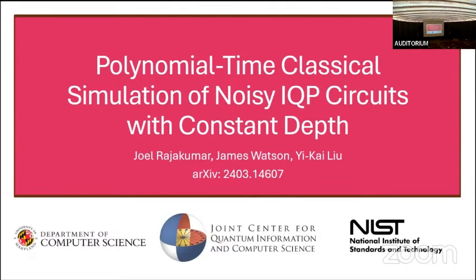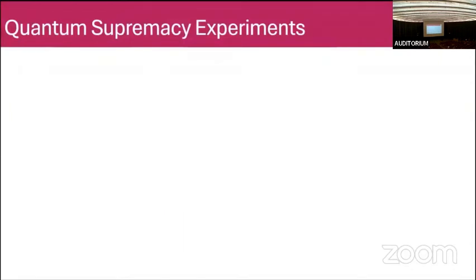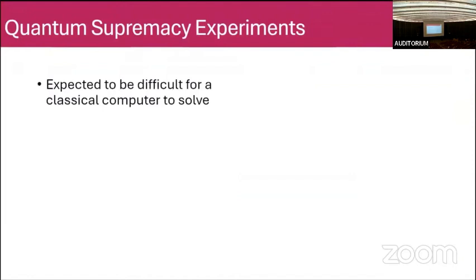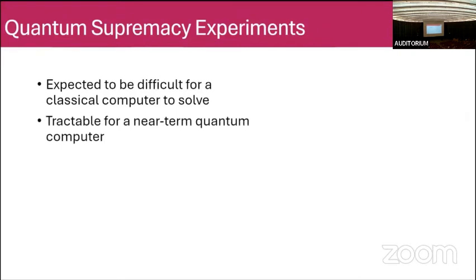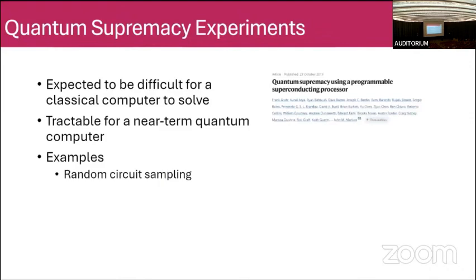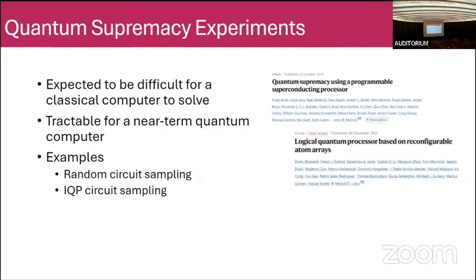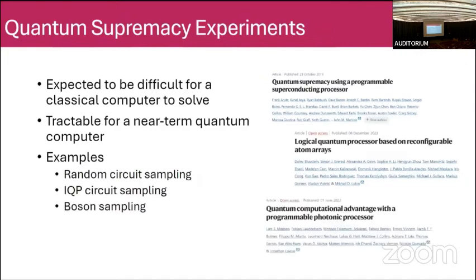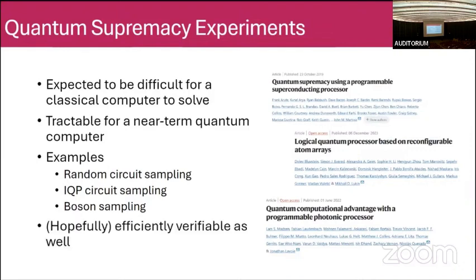A lot of what motivates this work is quantum supremacy experiments. These are tasks that are expected to be difficult for a classical computer to solve, and at the same time tractable for a near-term quantum computer. Some examples are random quantum circuits, implemented by the Google group, IQP circuits more recently implemented by the Harvard-QERA UMD collaboration, and boson sampling, also implemented on hardware recently. I'm going to focus on whether these tasks are difficult for a classical computer and whether they're tractable on a near-term quantum computer.